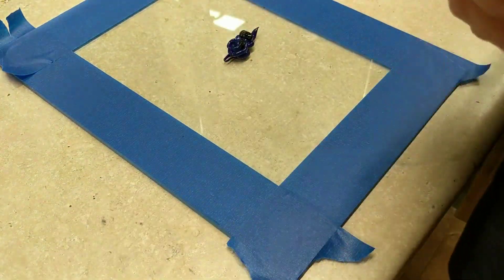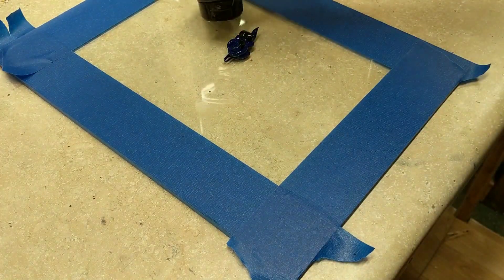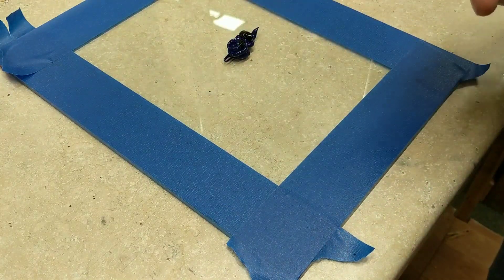I put the edges of the paper down a little bit with my finger. I squeezed a little blue out. This is acrylic paint. I squeezed a little black out.